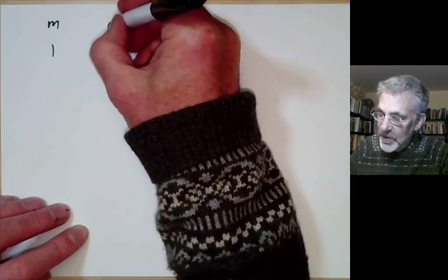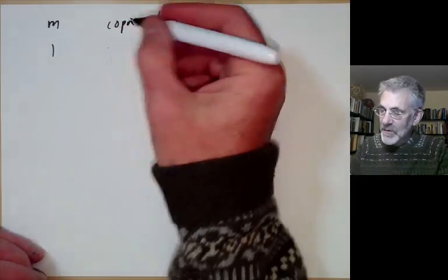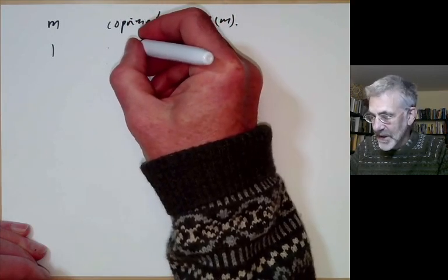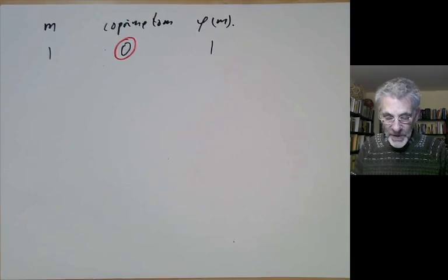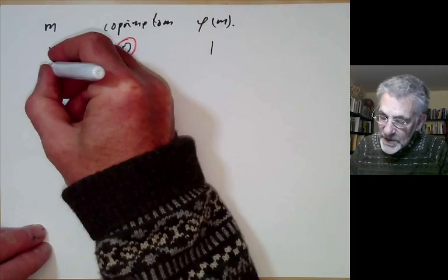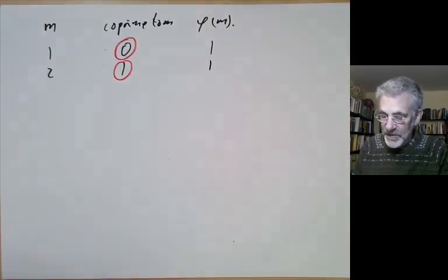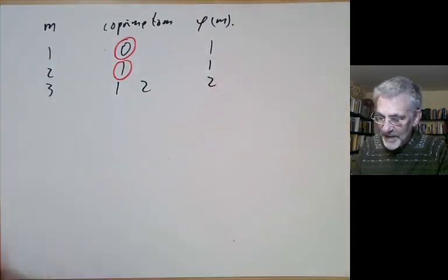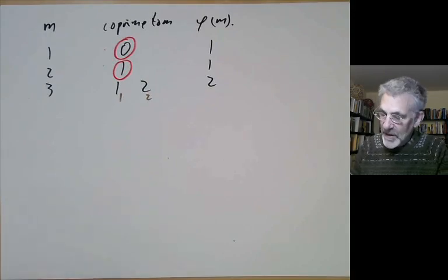Let's try various values of m. For m equals 1, phi of m is 1 and the only primitive root is 0 or 1. For m equals 2, the only thing coprime to 2 is 1; phi of m is 1 and 1 has order 1, so it's a primitive root. For m equals 3, phi of m is 2. The order of 1 is 1 and the order of 2 is 2, so 2 is the only primitive root.